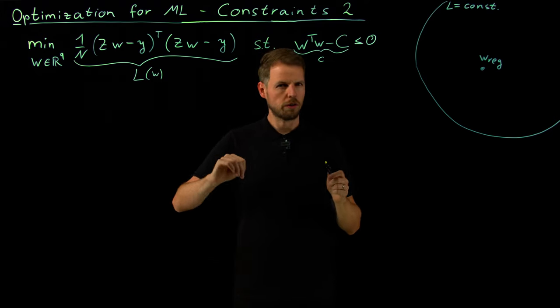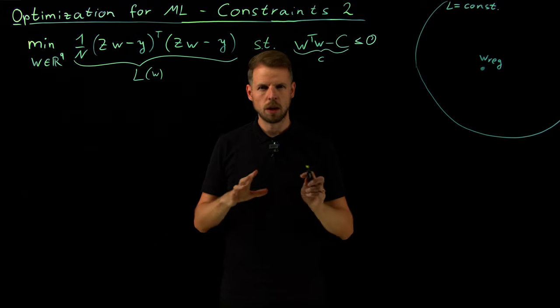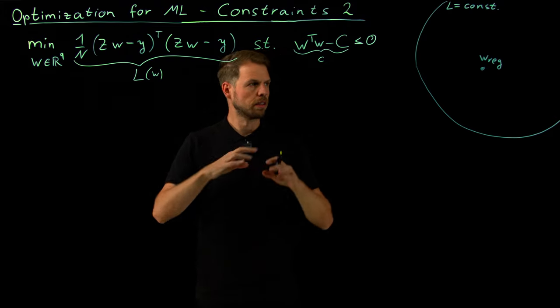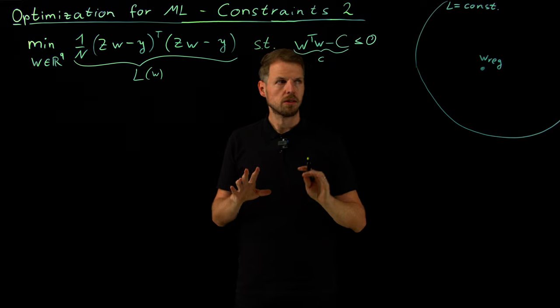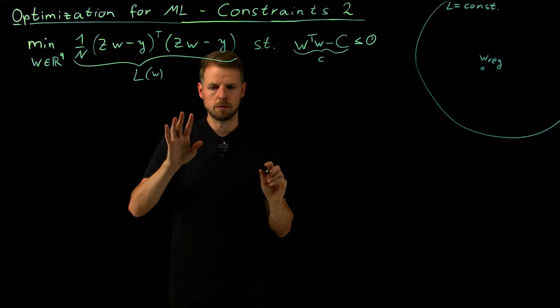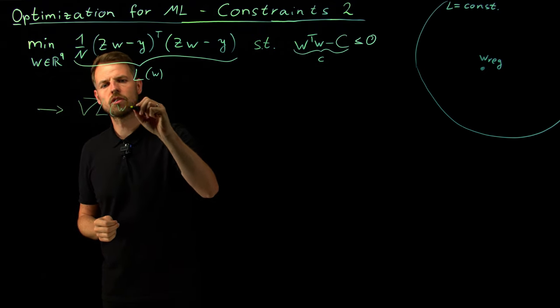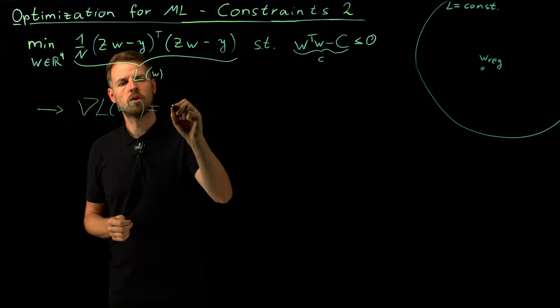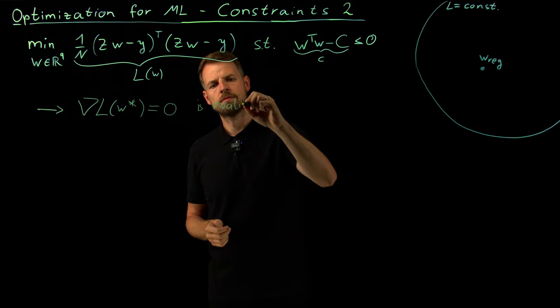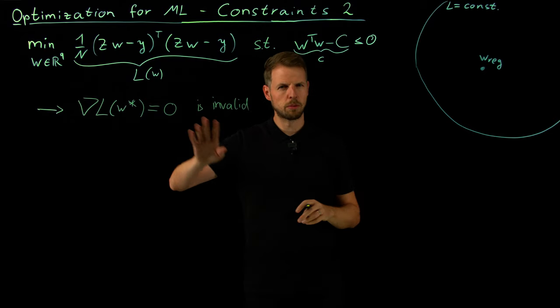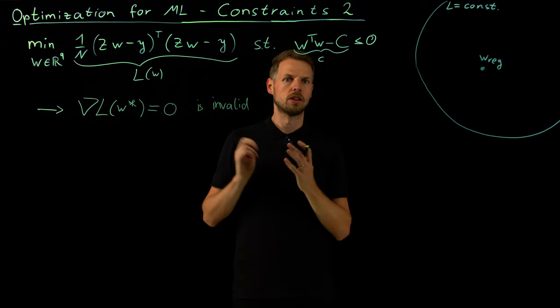And that we would like to solve problems of this type. Before we do this in a very general form and state what's known as the Karush-Kuhn-Tucker or KKT conditions in the next video, I would like to give you a short introduction and give you an intuition how these constraints really work. But one thing that we should mention before we continue: the central issue, our optimality condition, that the gradient of the loss function in our optimum has to be zero, is no longer valid. We have to come up with something else to show optimality and to find points that satisfy optimality conditions in the presence of constraints.